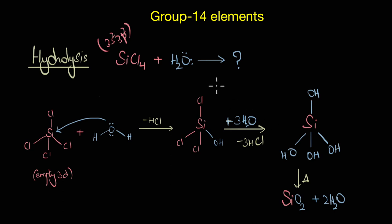To understand this, let us look at the reaction between silicon tetrachloride and water. The outer electronic configuration of silicon is 3s2 3p2, that means it has a presence of empty 3d orbital, and it is this empty 3d orbital that accepts a lone pair of electrons from the oxygen atom of water.